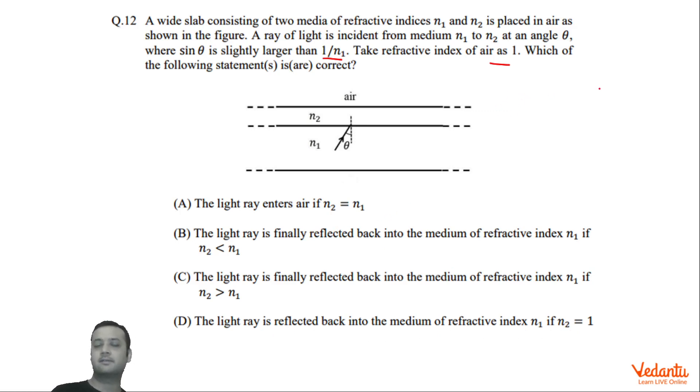The question is interesting. If you see one important thing, 1 by N1 is the critical angle for N1 and air interface. So for N1 and air, sine of theta C will be 1 by N1. Now this theta is greater than theta C, since sine theta is greater than 1 by N1.